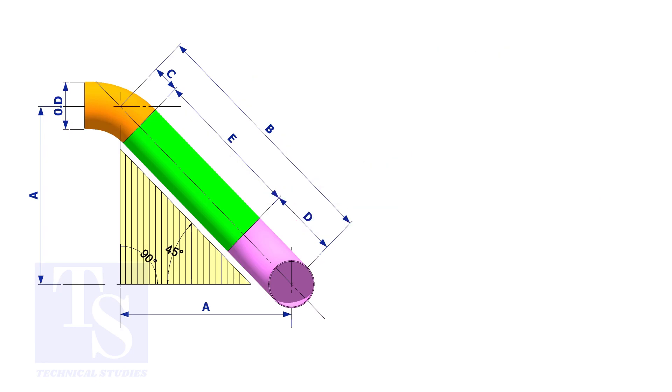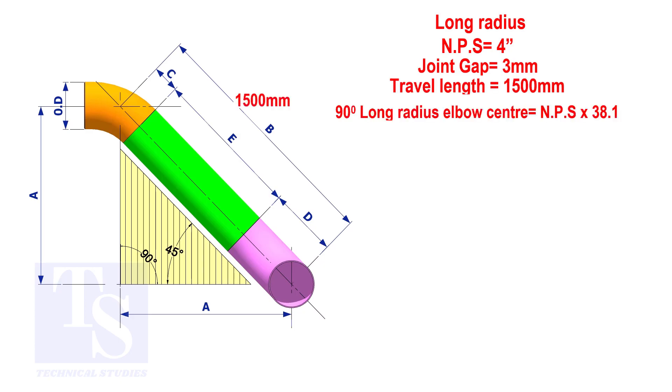Assume that the elbows are long radius. Calculate the true length of the pipe. The elbow center is the nominal pipe size multiplied by 38.1. So, the elbow center of the 90 degree elbow is 152.4 millimeters.